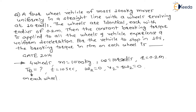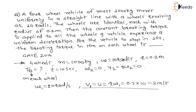The question asks: what is the braking torque in Newton-meter on each wheel? Initial angular velocity ω1 = 10 rad/s. Therefore, initial linear velocity v1 = r·ω1 = 0.2 × 10 = 2 m/s. Final linear velocity v2 = 0 m/s.